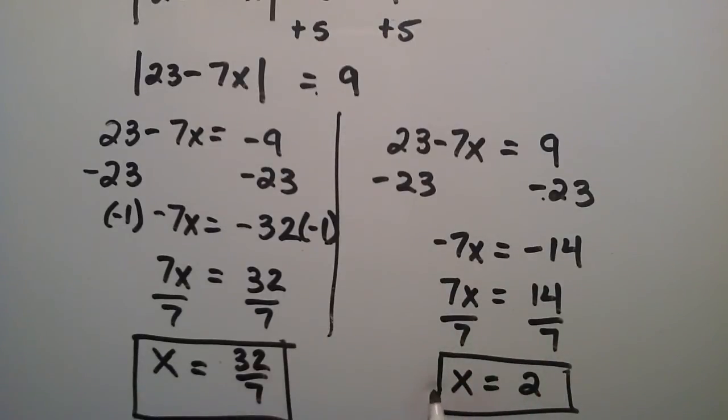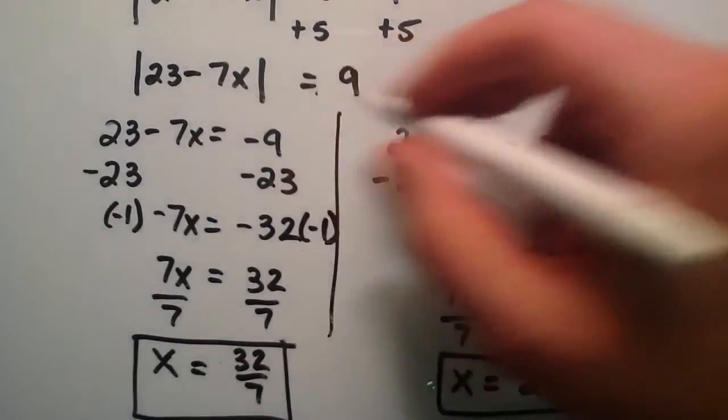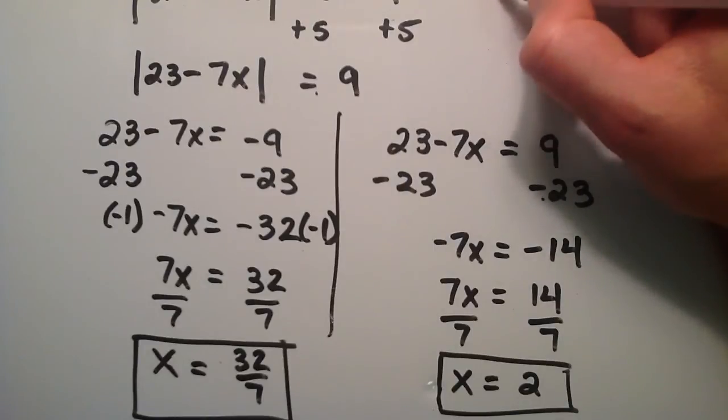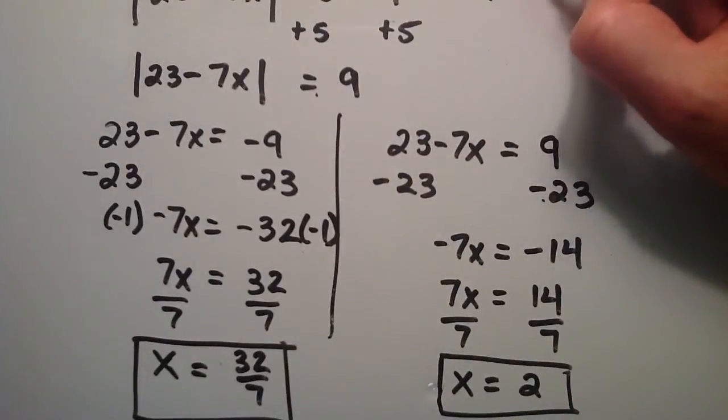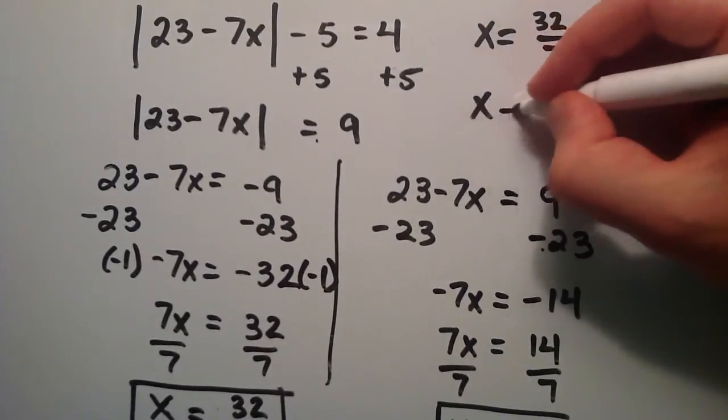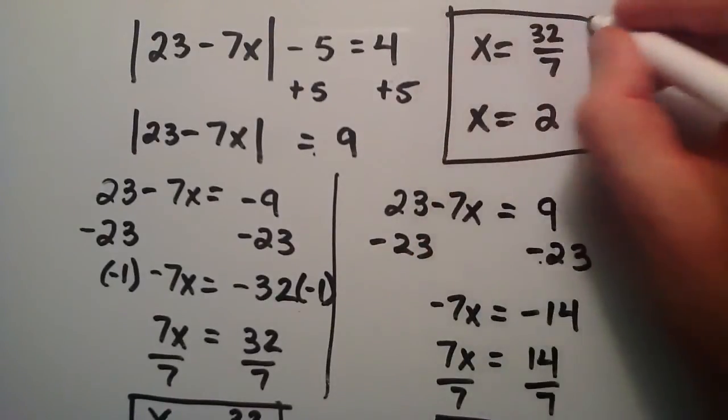So these are our two solutions. I'll go ahead and write them up here, and then I'll show you how they work with the above equation. So we have x is equal to 32 over 7, and x is equal to 2. So those are the two solutions we came up with.